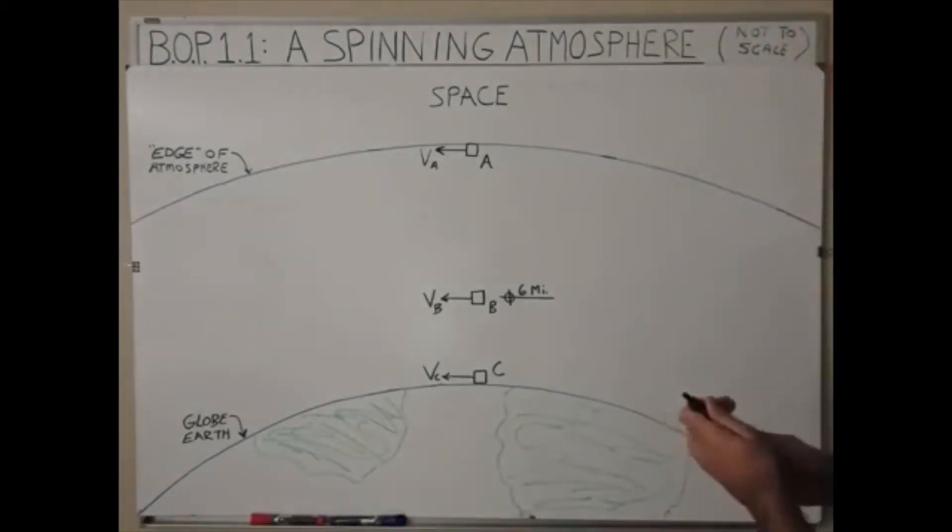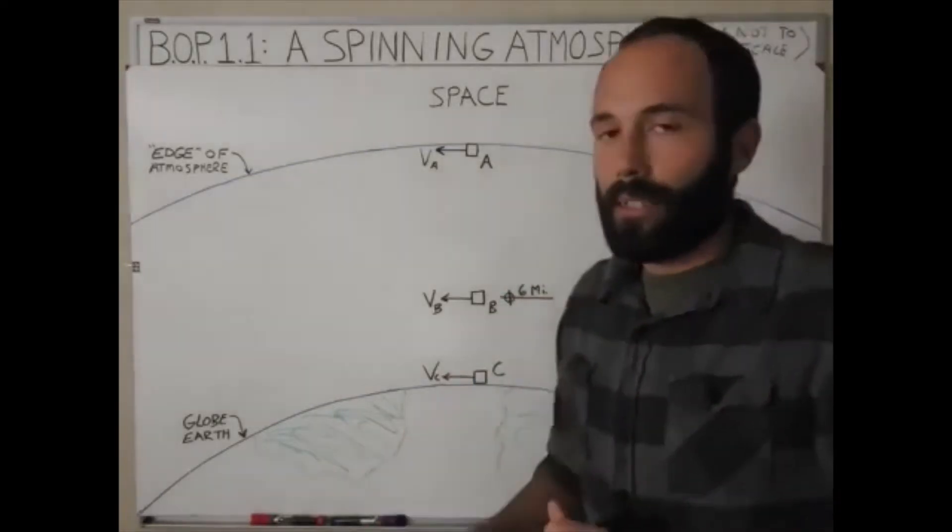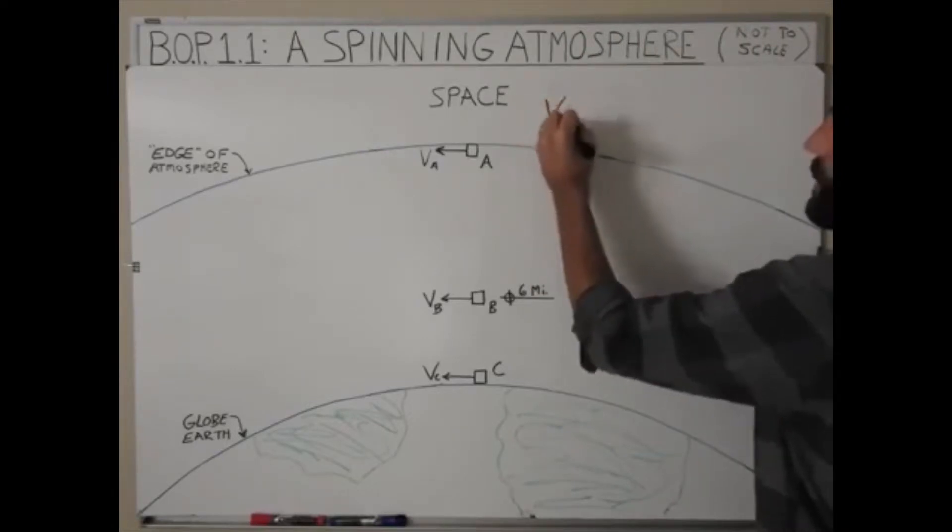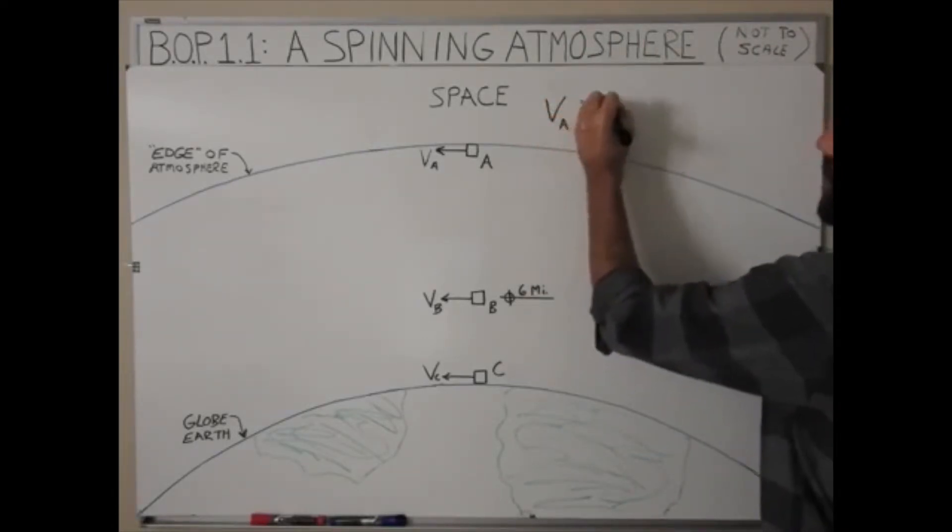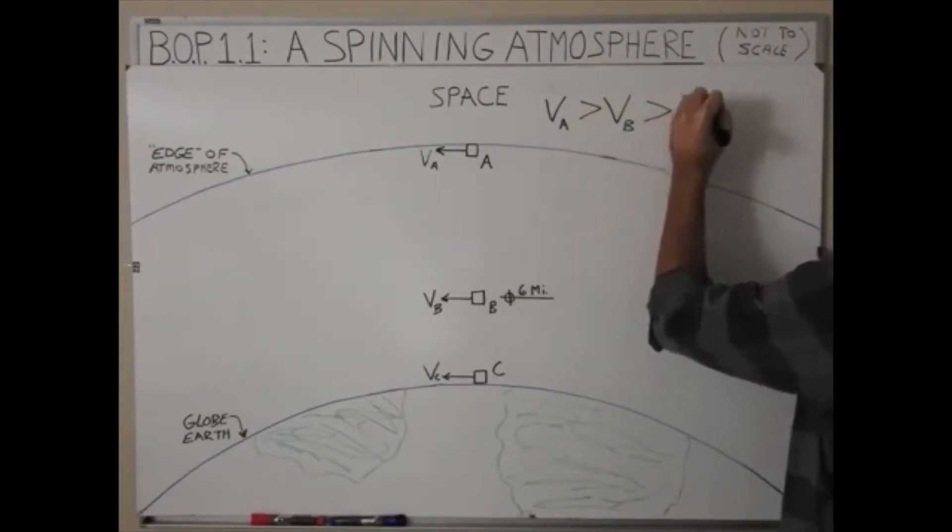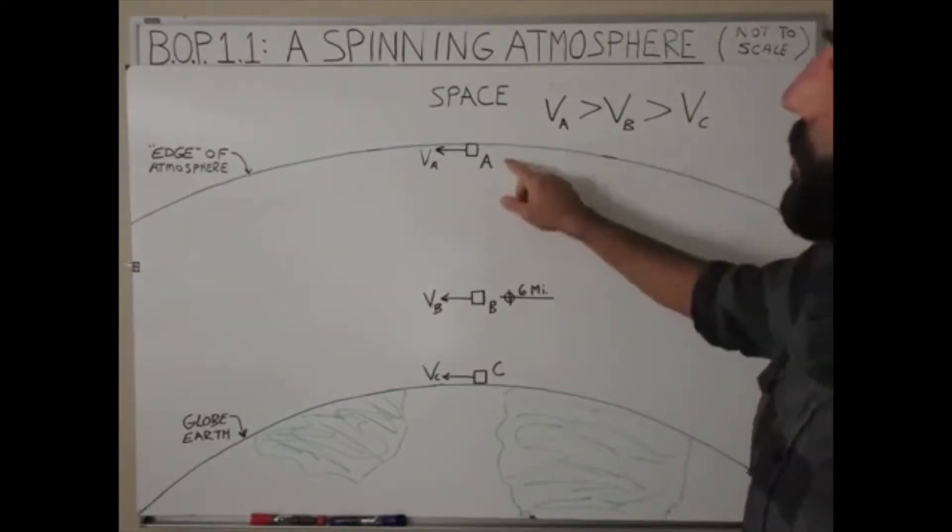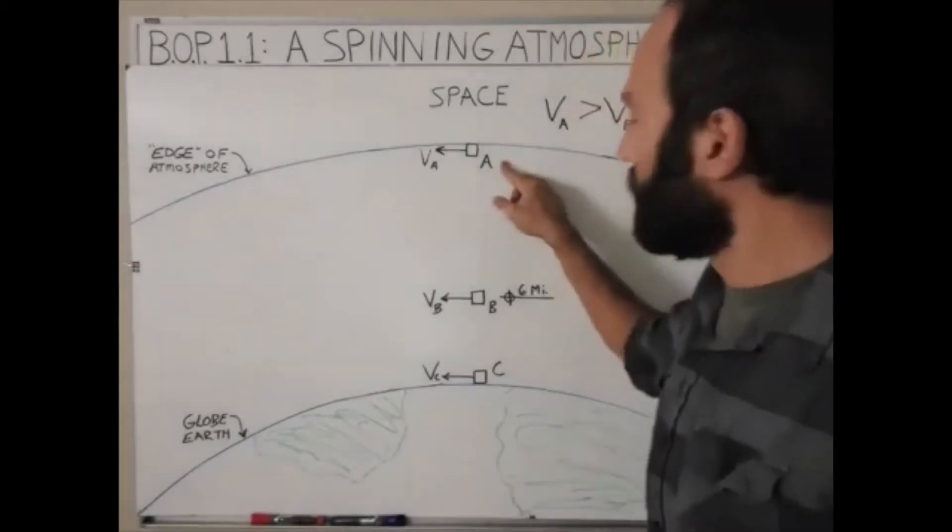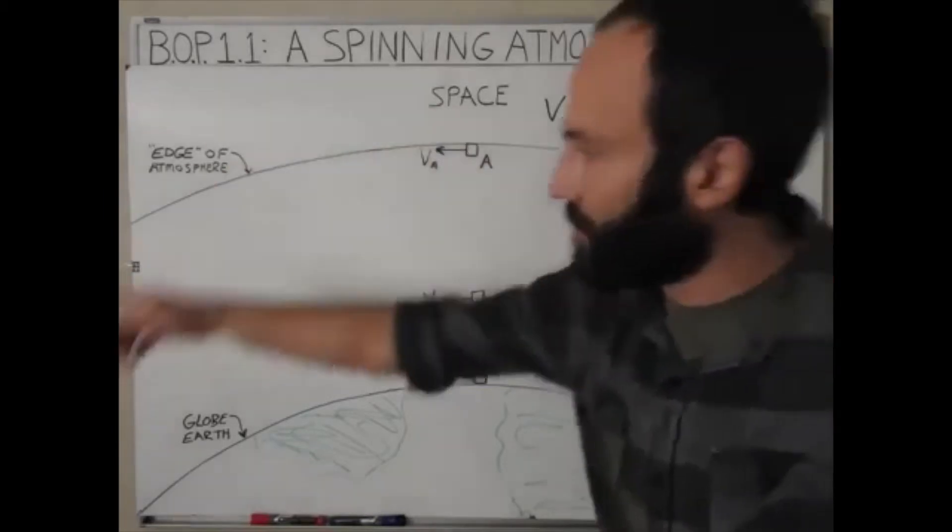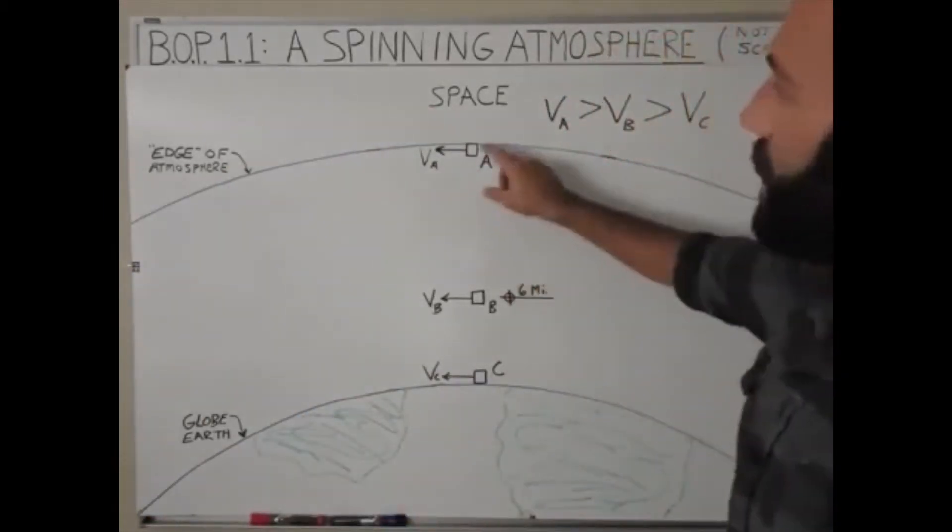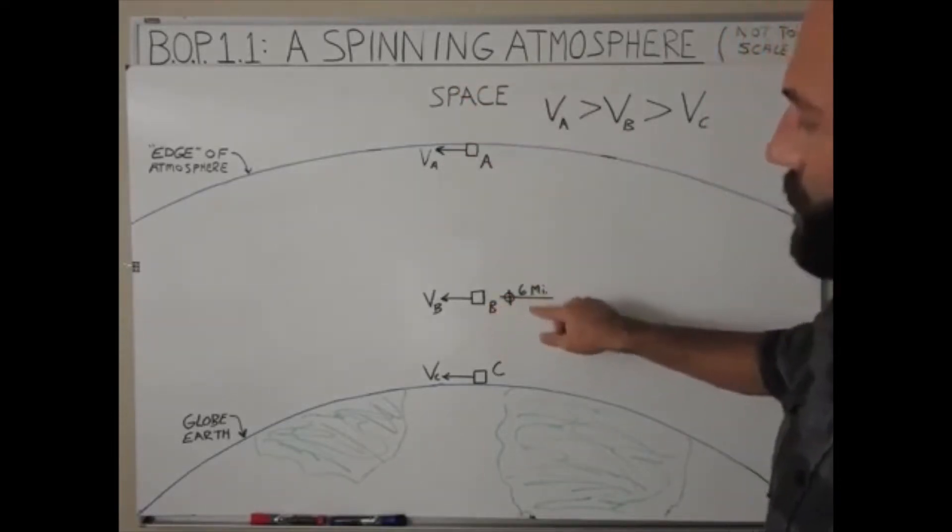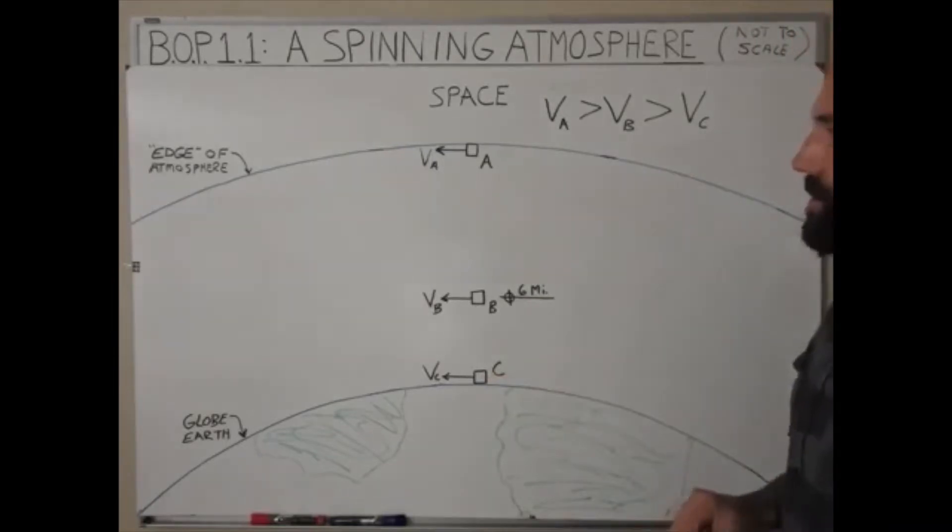So right off the bat, since we know the velocity is equal to distance divided by time, we can say that VA, the velocity of point A, is greater than the velocity of point B, which is greater than the velocity of point C, because point A has a longer distance to travel in 24 hours than point B, and point B has a longer distance than C, because the circumference of their path is greater. So I've got A up here at the edge of the atmosphere, space up here, B right here around six miles where planes fly, and C near the surface of the Earth.